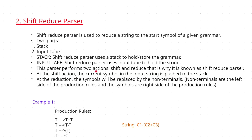This parser performs two actions: the first one is shift action and the second is reduce action — that is why it is known as shift reduce parser. While reducing a particular string to the start symbol, you perform two actions: shift action and reduce action. This is the reason we call this parser the shift reduce parser.